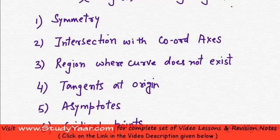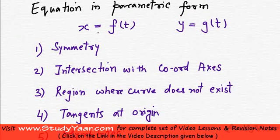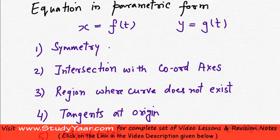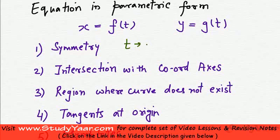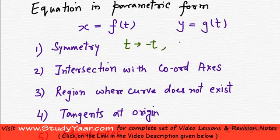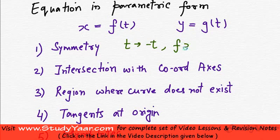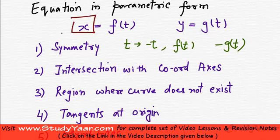Symmetry. So, let's see what happens to symmetry in this case. In this case, if you change t to minus t and f(t) remains as it is and g(t) becomes minus g(t), then we say that the curve is symmetric about x-axis.